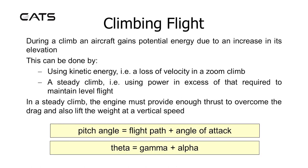During a climb, an aircraft gains potential energy due to an increase in its elevation. This can be done by using kinetic energy — i.e., a loss of velocity in a zoom climb — or a steady climb, i.e., using power in excess of that required to maintain level flight.